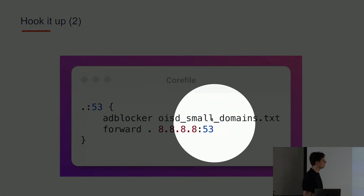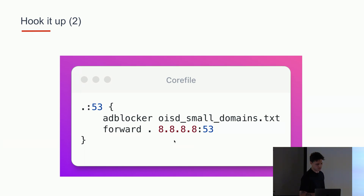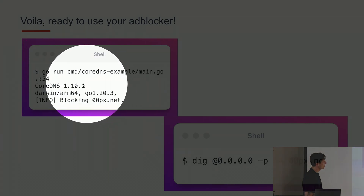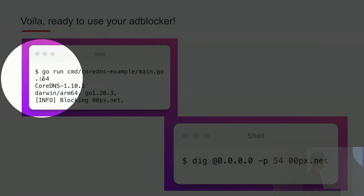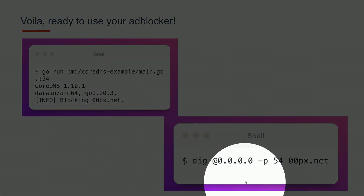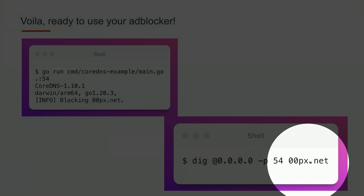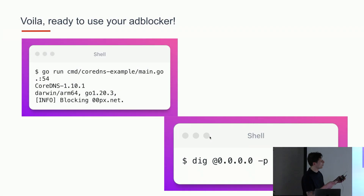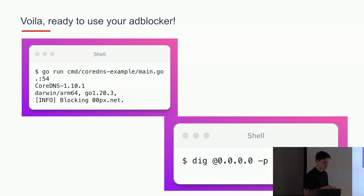We also need to modify the Corefile to specify that we want to use the ad blocker with the OISD file, and if we're not blocking the request then we want to forward it to the Google DNS — a really simple DNS proxy. If we run our main file — in this example it's listening on port 54, but it can be any port — and we execute a dig command to a domain that is on the list, you will see that we are blocking the response. In the DNS response you would see that it resolves to 0.0.0.0. That's a simple ad blocker.